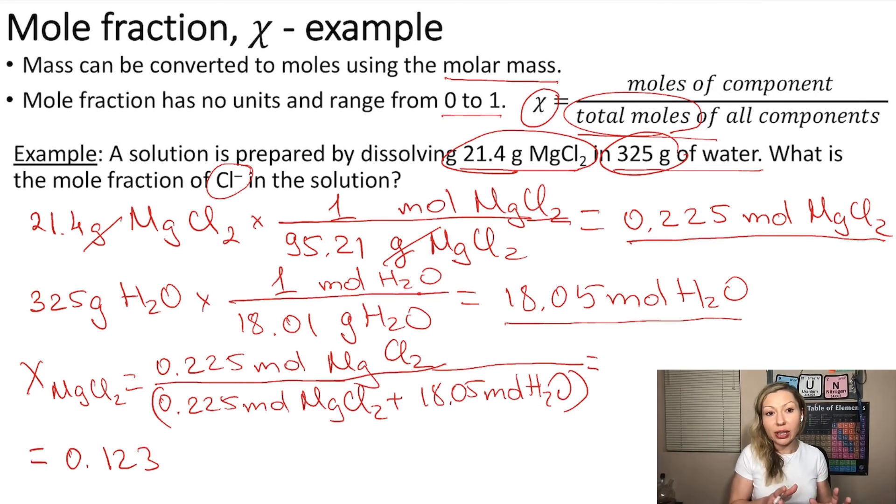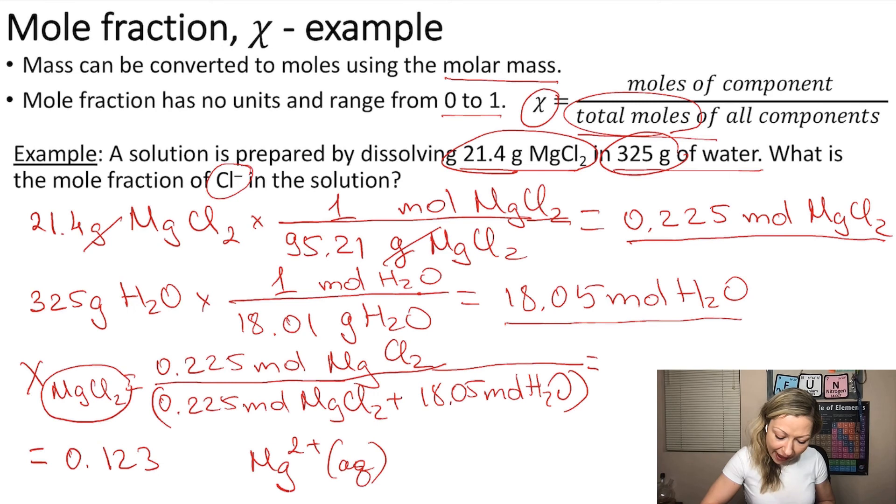This is the mole fraction—remember, it has no units—but this is for MgCl2. We know that when magnesium chloride dissolves in water, it produces Mg2+ aqueous ions and 2 moles of Cl- or chloride ions.